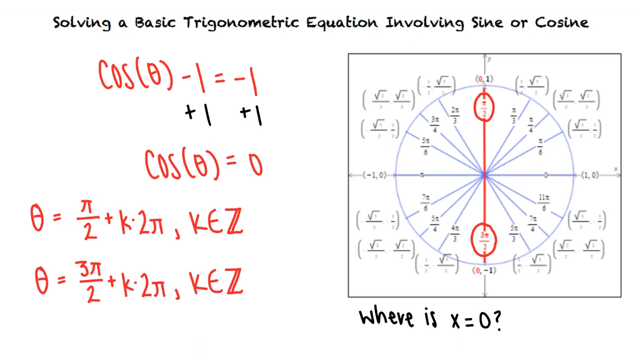Is this our final solution? We could leave our answer like this. However in this case we notice that the two solutions can be condensed into one. Since 3 pi halves is pi halves plus pi we can write our solution as theta equals pi halves plus k pi k element z.